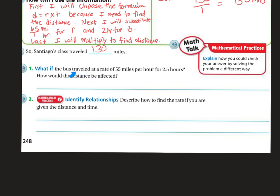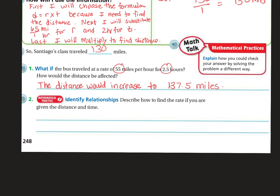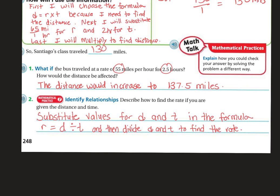What if the bus traveled at a rate of 55 miles per hour for 2 and a half hours? How would the distance be affected? If I substituted those new numbers of 55 and 2 and a half, the distance would increase to 137.5 miles. Describe how to find the rate if you are given the distance and the time: substitute the values for D and T in the formula R equals D divided by T, because if you're looking for rate, you want rate on this side of the equal sign. Once you divide D and T, you will find the rate.